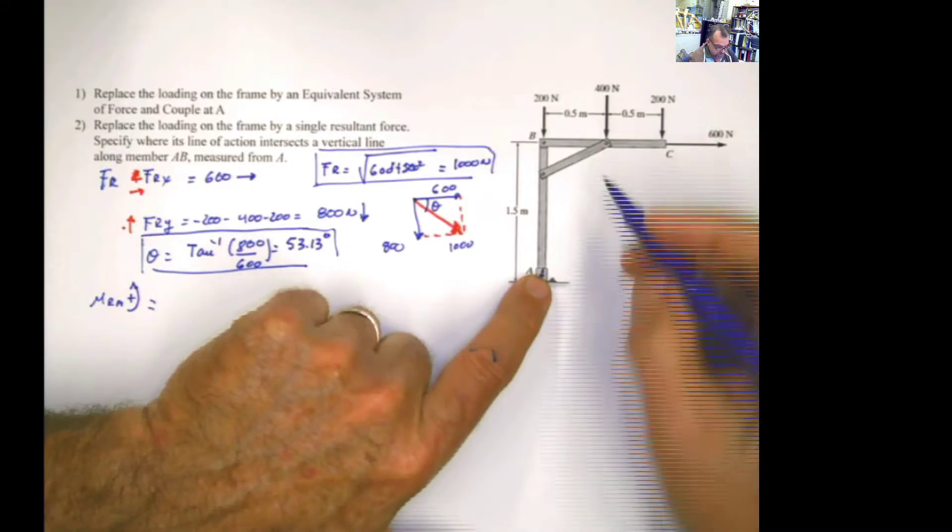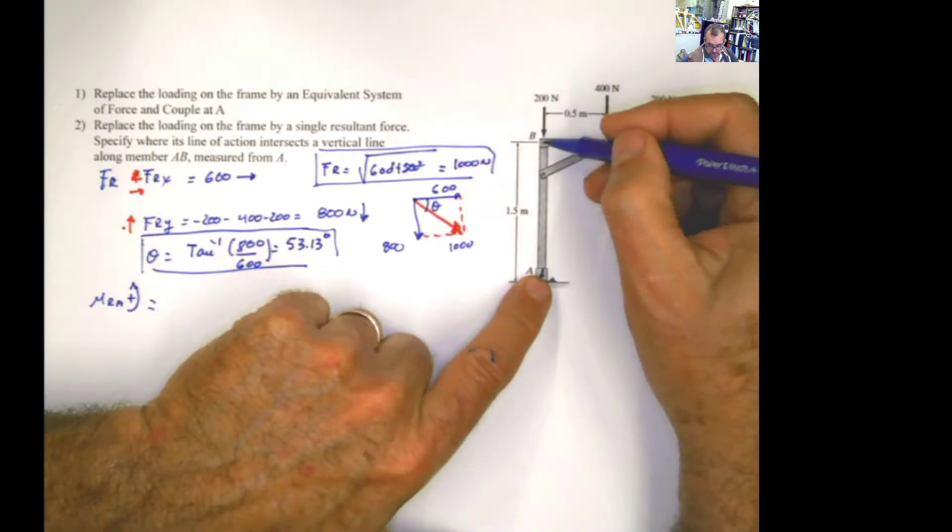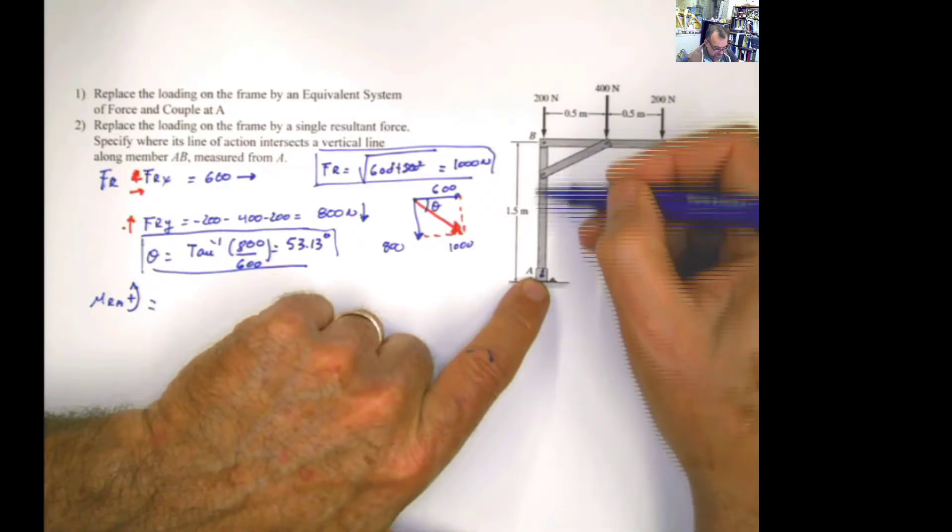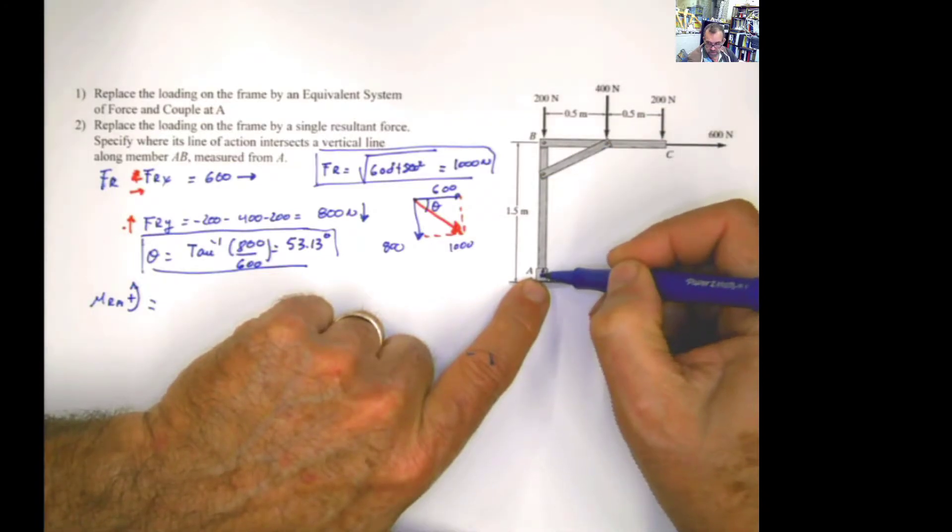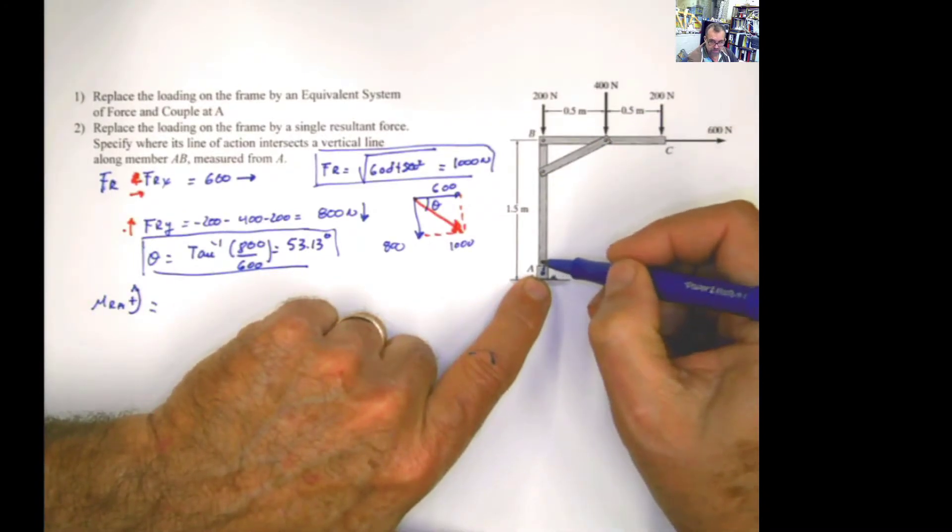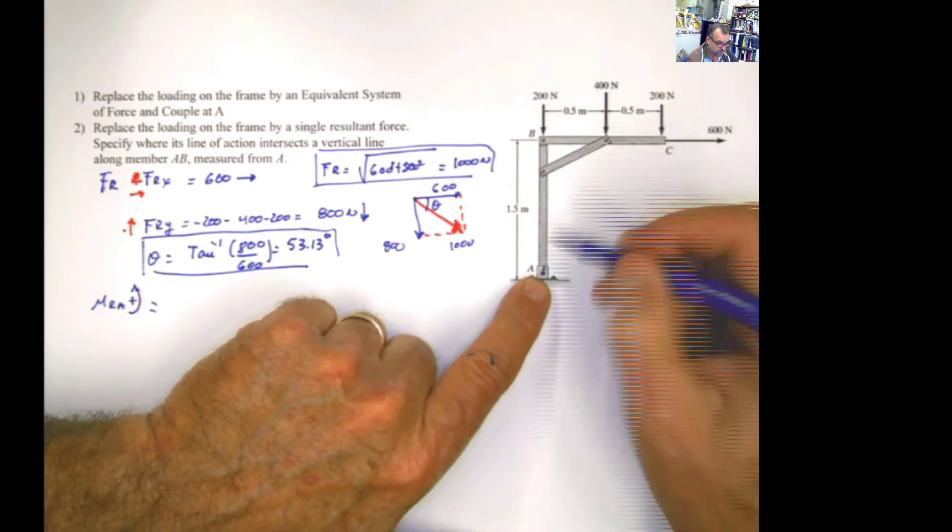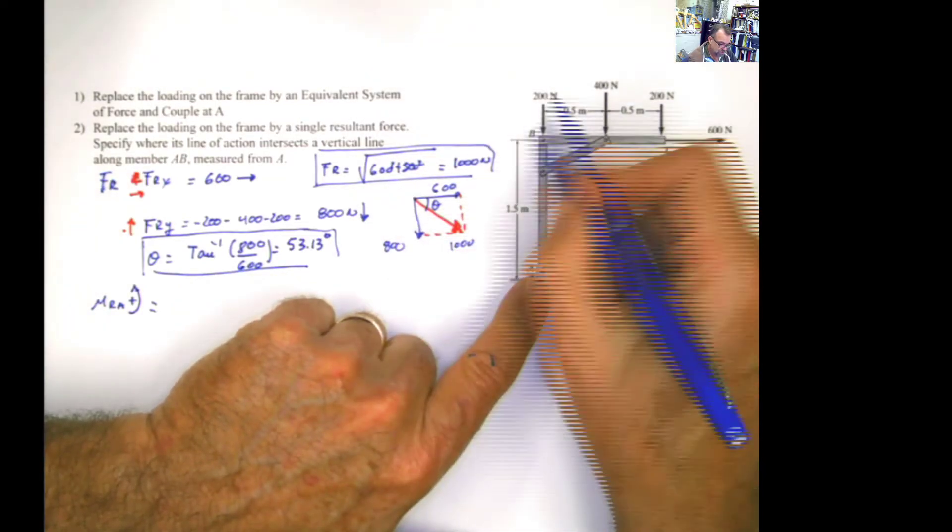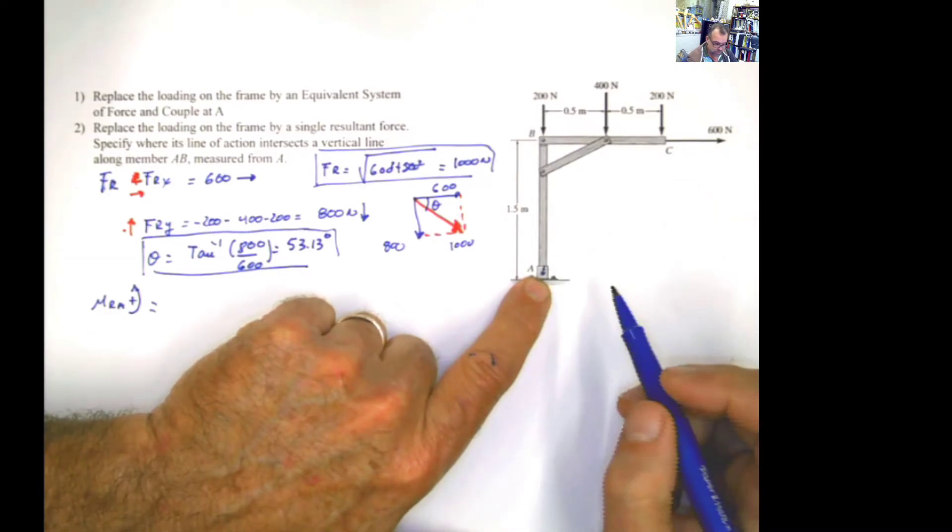I'm going to say that counterclockwise is positive. So let's start. This force of 200, the force, the line of action of the force, passes through the point that I'm studying. If that is the case, that force doesn't produce any moment. It's just a push, not a rotation.